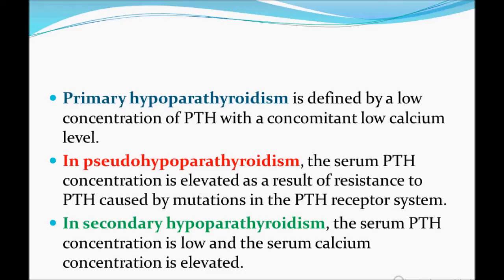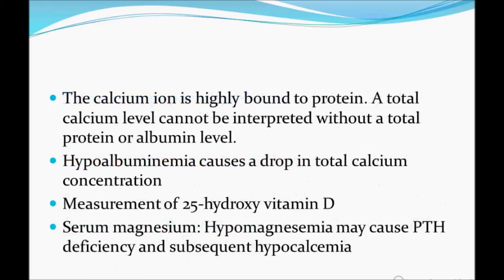In secondary hypoparathyroidism, the serum PTH concentration is low and the serum calcium concentration is elevated. The hypoparathyroidism feature requires PTH to be low — elevated calcium achieves this via negative feedback. Remember: the calcium ion is highly bound to protein, so a total calcium level cannot be interpreted without a total protein or albumin level. Hypoalbuminemia causes a drop in total calcium concentration.